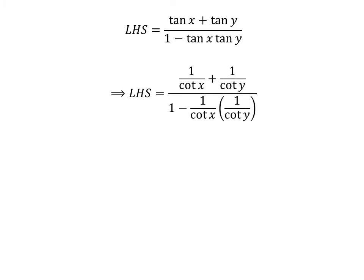We know the cotangent function is the reciprocal of the tangent function. Thus, replacing tangent of x by 1 upon cotangent of x, and tangent of y by 1 upon cotangent of y, gives us: left-hand side equals 1 upon cotangent of x plus 1 upon cotangent of y, upon 1 minus 1 upon cotangent of x times 1 upon cotangent of y.